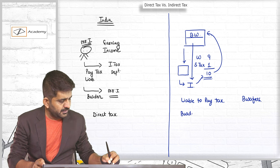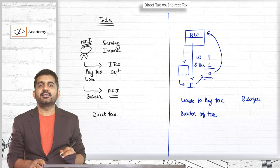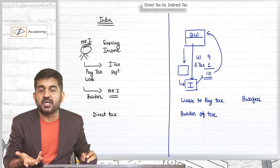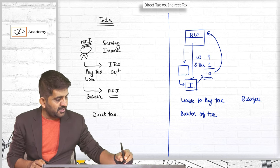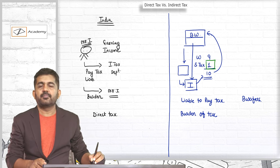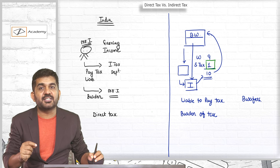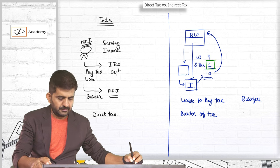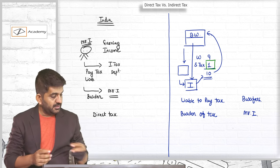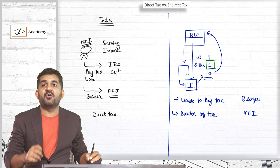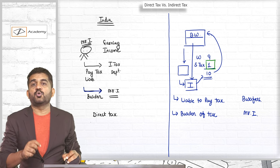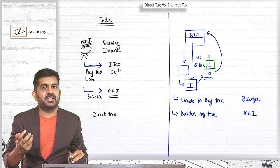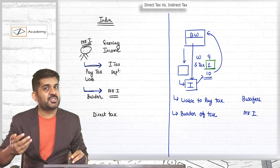If you understand the burden of tax, who is bearing the burden of this tax? It is nothing but Mr. I. You will say Mr. I is never going to the sales tax department and paying tax — Mr. I is giving this Rs. 1 to Balaji Wafer, and Balaji Wafer is going to the sales tax department and paying this Rs. 1. So burden of tax is on Mr. I. Liability to pay tax is on Balaji Wafers, but burden of tax is on Mr. I. Whereas in income tax, liability to pay tax was of Mr. I and even the burden of tax was on Mr. I — so burden and liability both on Mr. I means it is a direct tax. Burden on someone else and liability on someone else is an indirect tax.